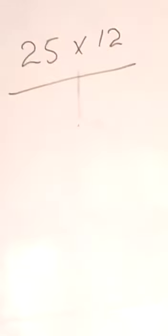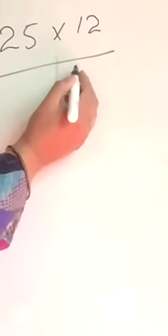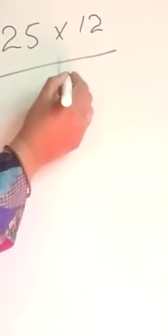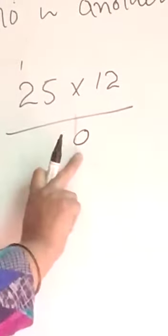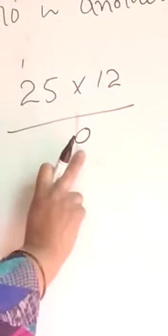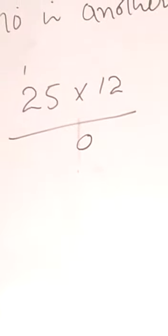Aap ko agar table yaad hongi toh aap achhe se kar payenge. Agar table nahi yaad hongi toh dikkat ho jayegi. Toh, two-fives are ten. Yahan pe yeh zero lagega — ones ki position pe jayega.